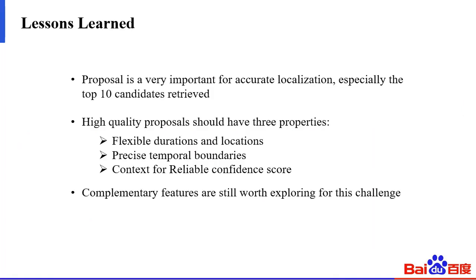For this challenge, we learned lessons in three aspects. First, proposals are very important for accurate localization, especially the top-10 candidates retrieved. Second, high-quality proposals should have three properties: flexible durations and locations, precise temporal boundaries, and context for reliable confidence scores. Third, complementary features are still worth exploring for better performance.